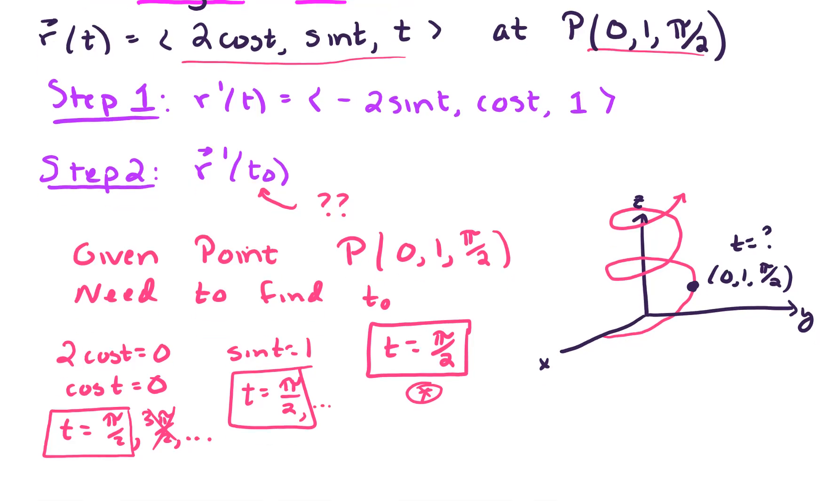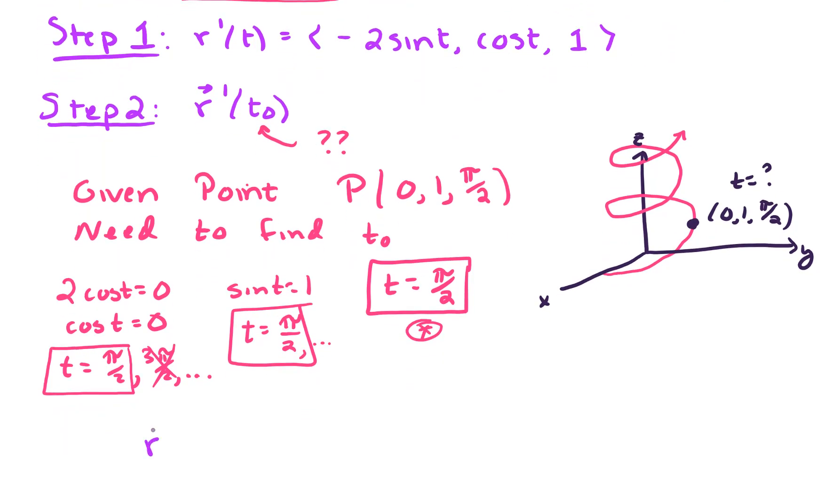Alright, so we still need to compute what is r prime of t0. What is r prime at pi over 2? So plugging in, we get negative 2 sine of pi over 2, cosine pi over 2, and last component is simply just 1. And so what this works out to be is this is negative 2, 0, and 1. Alright, so that tells us the direction of the tangent line at that point.